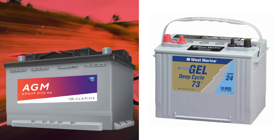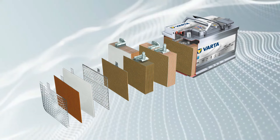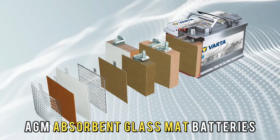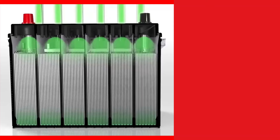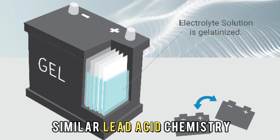The main difference between AGM and gel batteries is their chemistry. AGM, absorbent glass mat batteries, have a lead acid chemistry where the electrolyte is absorbed in a fiberglass mat. Whereas gel, or gelled electrolyte batteries, have a similar lead acid chemistry, but with the electrolyte in a gel-like form.